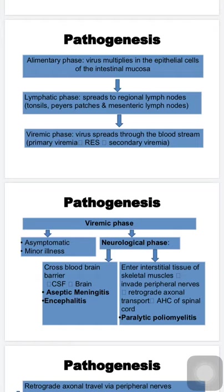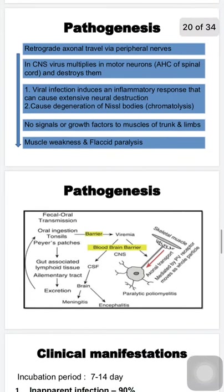Otherwise, the virus invades the central nervous system in the neurological phase. It can cross the blood-brain barrier within phagocytes, reaching the CSF and brain causing aseptic meningitis or encephalitis. Alternatively, the virus in the blood enters the interstitial tissue of skeletal muscles, invades peripheral nerves innervating those muscles, and by retrograde axonal transport reaches the anterior horn cells of the spinal cord, causing destruction and resulting in paralytic poliomyelitis.